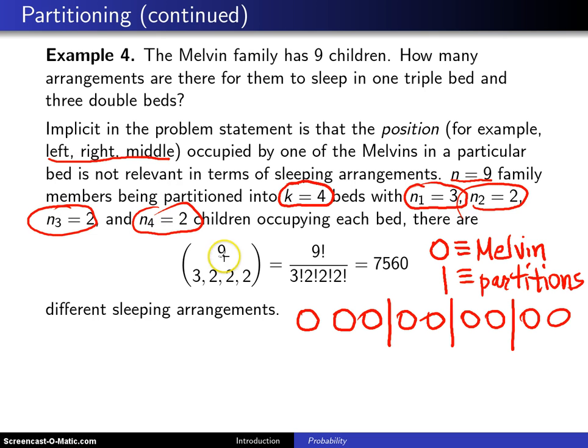So there are a total of nine choose three, two, two, two, which is nine factorial divided by three factorial, two factorial, two factorial, two factorial, which is 7560 different sleeping arrangements.